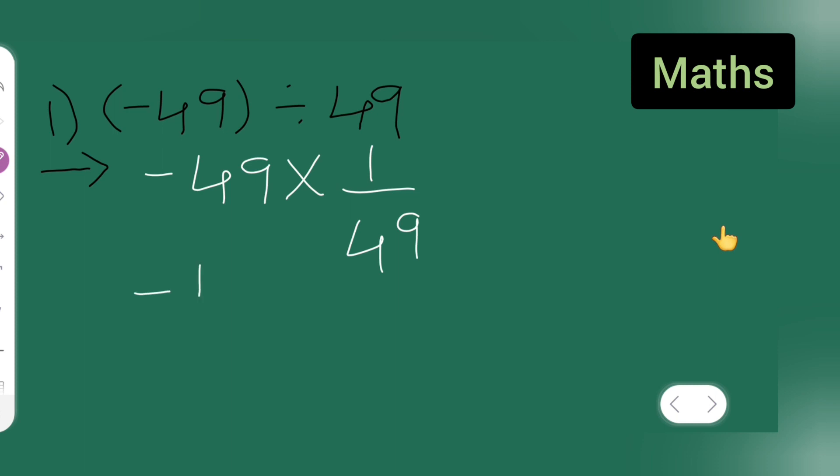So basically what you're going to get is 49, 1 is 49 upon 49. Right, cancel these two terms and you will get minus 1.